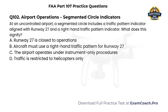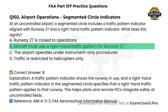Airport operations. Segmented circle indicators. At an uncontrolled airport, a segmented circle includes a traffic pattern indicator aligned with runway 27 and a right-hand traffic pattern indicator. What does this signify? A. Runway 27 is closed to operations. B. Aircraft must use a right-hand traffic pattern for runway 27. C. The airport operates under instrument-only procedures. D. Traffic is restricted to helicopters only. Correct answer: B. A traffic pattern indicator shows the runway in use, and a right-hand traffic pattern indicator in the segmented circle specifies that a right-hand traffic pattern applies to that runway. This helps pilots and remote PICs integrate safely at uncontrolled fields.